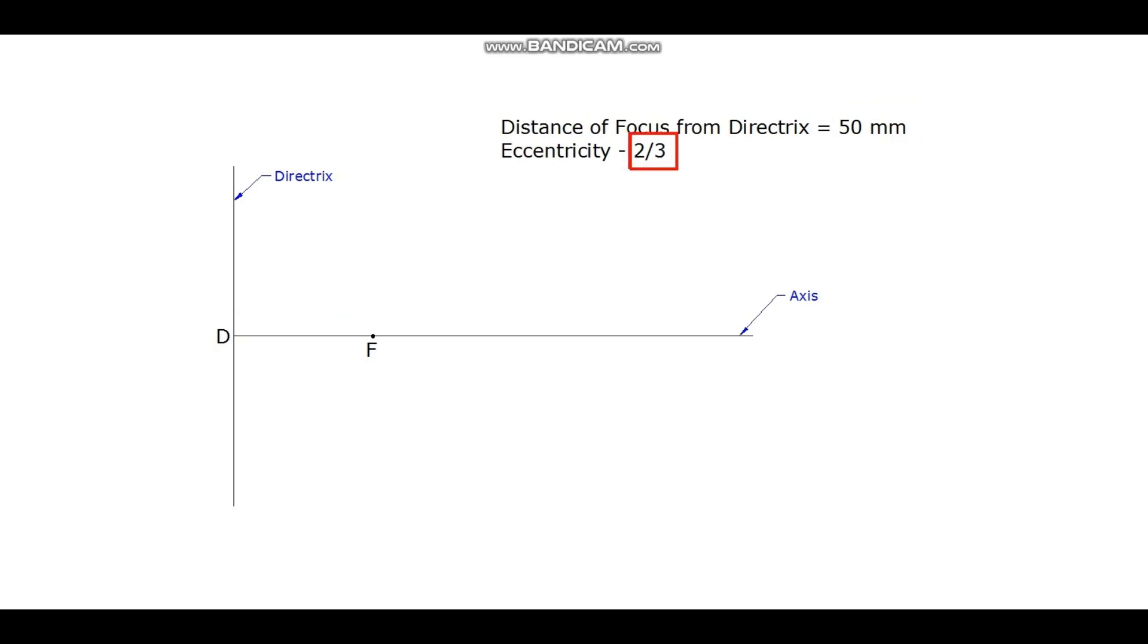Eccentricity ratio is 2 by 3. By adding the numerator and denominator, that is 2 plus 3 is equal to 5, so the focus distance D to F should be divided into 5 equal parts.